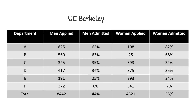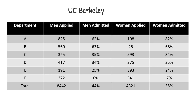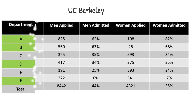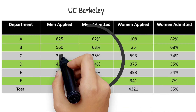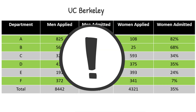And here is the evidence. Breaking down the data of the top 6 departments of the university, we can easily figure out that the admission percentage of women is greater than men in 4 departments out of 6. So definitely there is no women discrimination.